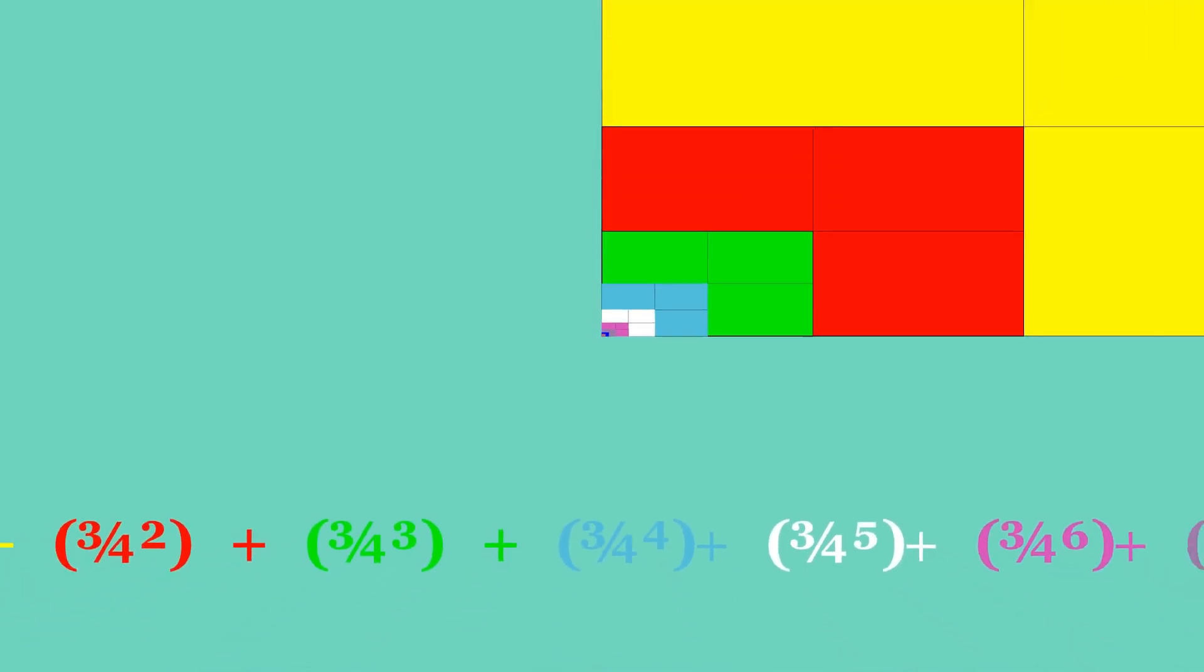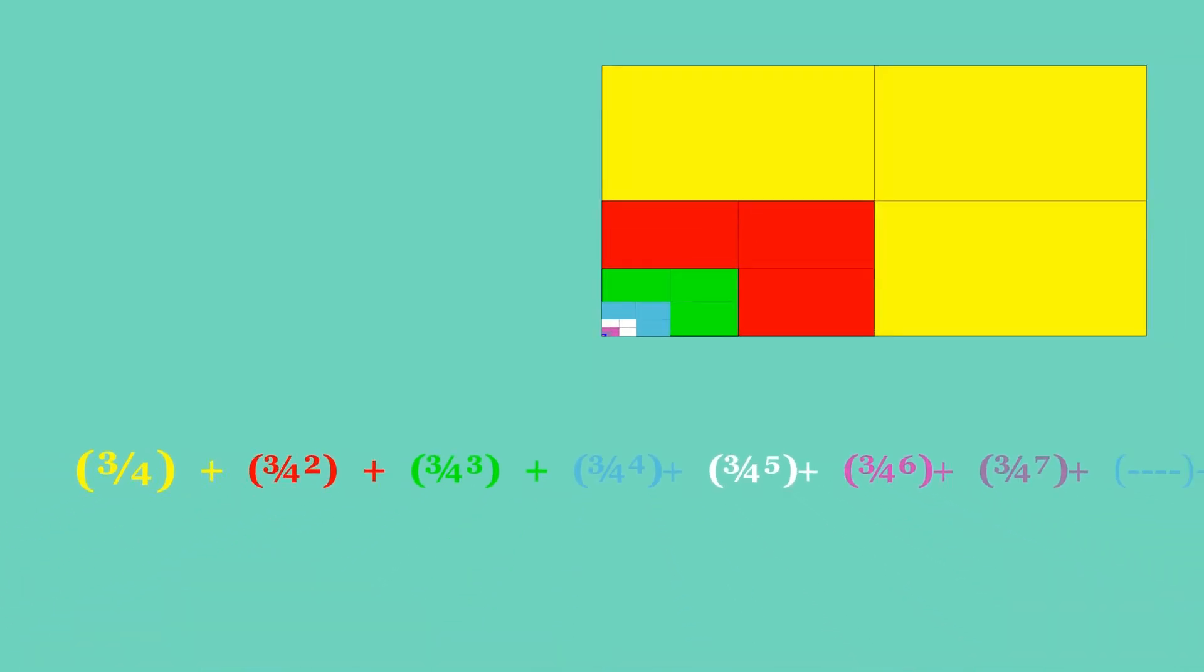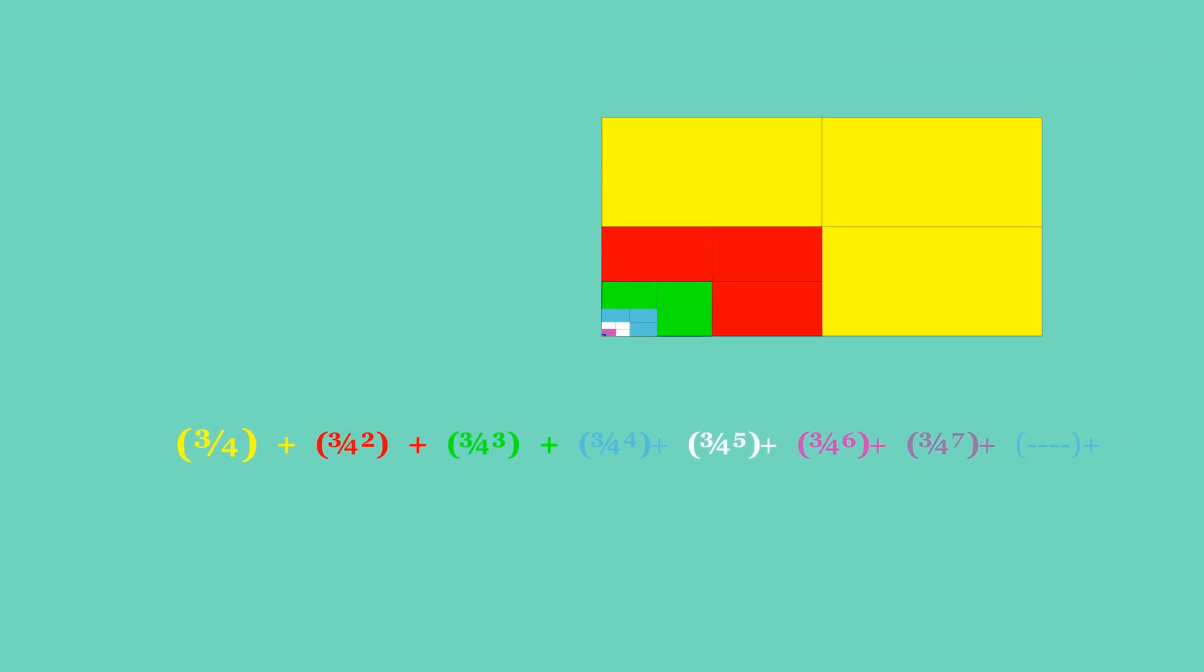Now add the areas of all these smaller rectangles, mini rectangles, mini mini rectangles and so on, such that the total becomes three quarters plus three divided by four squared plus three divided by four cubed plus three divided by four to the fourth power plus.